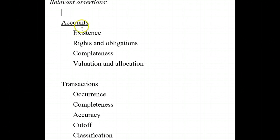Assertions about account balances include existence — that our assets, liabilities, and equity interests do exist. Rights and obligations — that the entity holds or controls the rights to the assets and that the liabilities are their true obligations. Completeness — that all accounts have been recorded. Valuation and allocation — making sure our assets, liabilities, and equity interests are all included at the appropriate amounts.